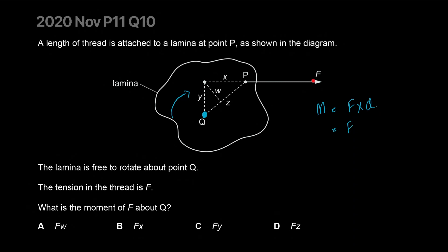The moment of a force is force times the distance. This distance is the perpendicular distance from the line of action of force to the point of the pivot. That's the distance, and that's actually equal to Y. So FY is our answer. The correct answer is C.